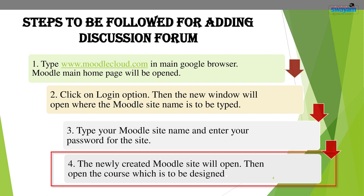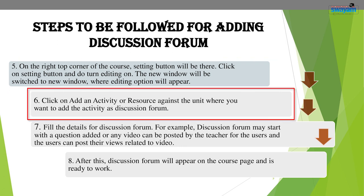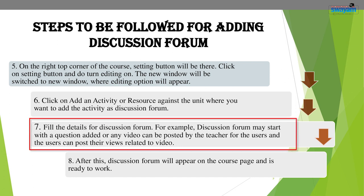Open the course which is to be designed. On the top right corner of the course, a settings button — an inverted orange color triangle — will be there. Click on the settings button and do Turn Editing On. A new window will appear where the editing option is visible. Click on 'Add an activity or resource' against the unit where you want to add the discussion forum. Find the discussion forum in the activity list and fill in the details.